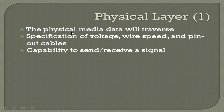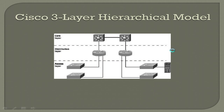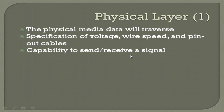The physical medium is what data will traverse. It covers specifications of voltage, wire speed, and pin-out capability for sending and receiving signals. The physical layer can be wireless, it can be an Ethernet cable, and so on.